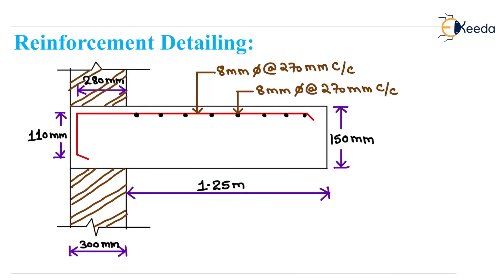Therefore, extend the bar into the support after giving a 90 degree bend for a distance of 390 mm. Reinforcement detailing of chajja: overall depth is 150 mm, having 8 mm dia bar as main reinforcement as well as distribution reinforcement, spacing of 270 mm centre to centre, and development length of 390 mm with a 90 degree bend at the support.